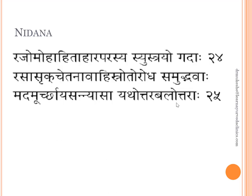As far as the Nidana of Mada, Murcha and Sanyasa is considered, this disorder involves Rasa, Rakta and Manovaha or Chetanavahi Srotasas. So obviously there will be Sharirika as well as Manasika Nidanas. There is Rajas, Moha, Ahita Ahara and Parisya — especially those Ahara and Viharas that increase Rajas and Tamas in the body. This happens due to Srotorodha that occurs in the Rasa, Rakta and Chetanavahi Srotasas.